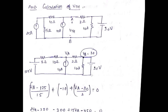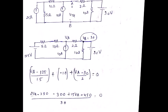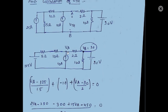The node voltage Vb equals 30 V directly since it is directly connected to the 30 V source. To find Va, I apply nodal analysis assuming outgoing currents: (Va − 125) / 15 − 10 + (Va − 30) / 2 = 0. The term −10 appears because the 10 A current is incoming; to express it as outgoing, we negate it. Solving this equation gives the value of Va, which equals Vth.